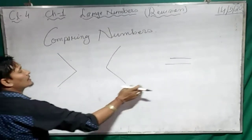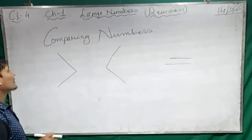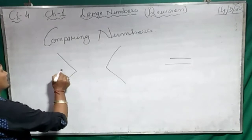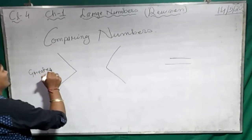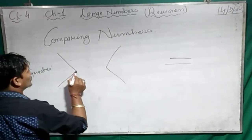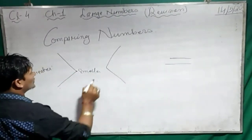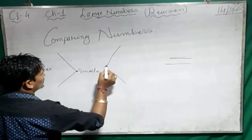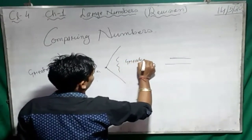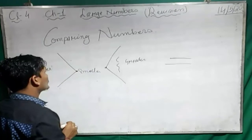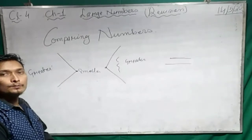Why do we say this is greater, this is smaller, and this is equal? The main thing is that the open mouth of the symbol shows the greater number, and the closed mouth shows the smaller number. This part shows the smaller number, this part also shows the smaller number, and this part shows the greater number. So open mouth always shows the greater number and the closed mouth always shows the smaller number.